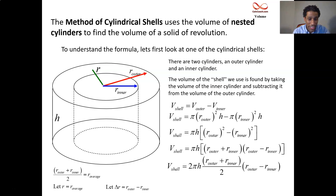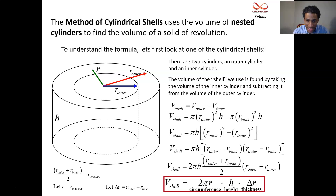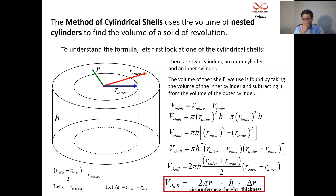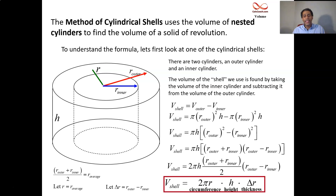The volume of this particular shell is 2 pi r h times delta r. Imagine you have a can and a label on the can — if you slice the label and unroll it, you'll have two dimensions for the area of that label: the circumference for the unrolling dimension and the height. Then a small thickness gives us the volume. So 2 pi r is the circumference, h is the height, and then we have our thickness. Thinking about it that way helps you see where the formula comes from.